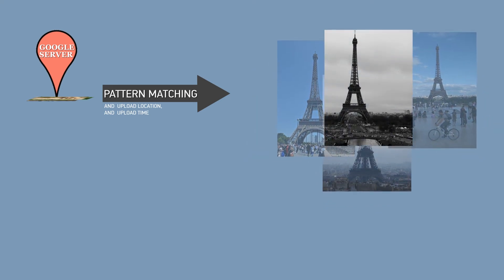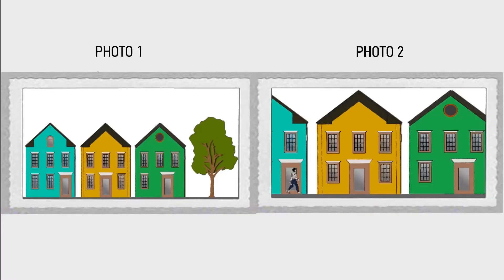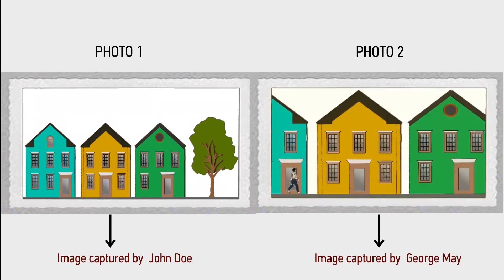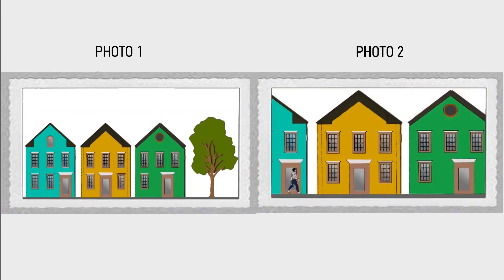Let's check out an example. Here are two photographs of the same location. The first image of the location is captured by a first user, and the second image of the same location is captured by another user at another time.